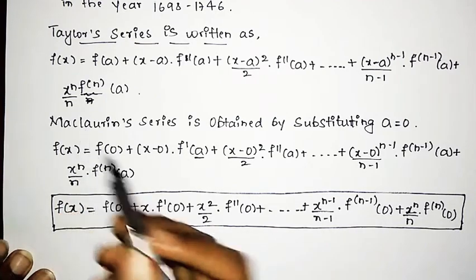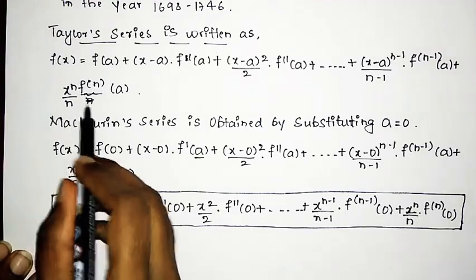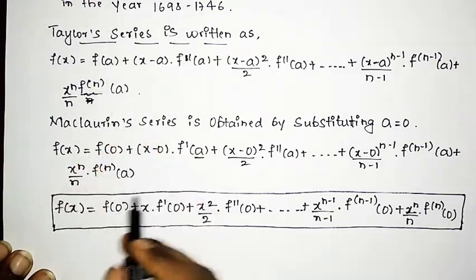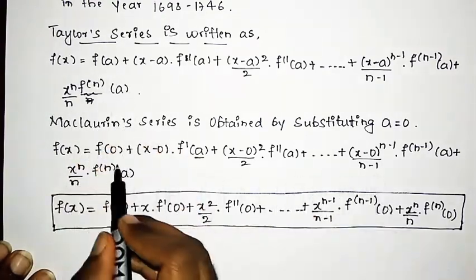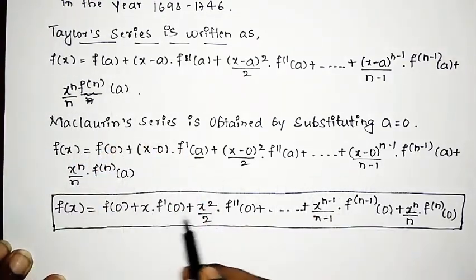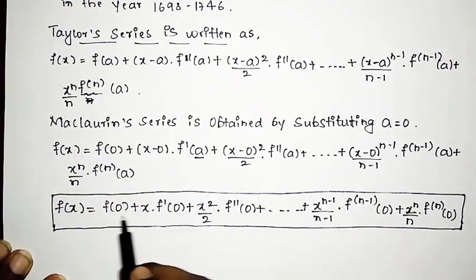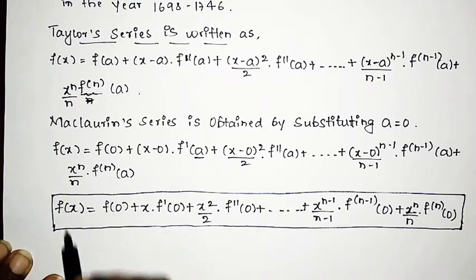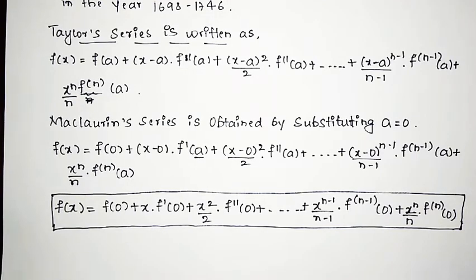We have taken the Taylor series and substituted a with 0. Wherever there is an a, we replace it with 0, and thus we obtain the Maclaurin series. Thank you friends — subscribe to our channel for more updates.